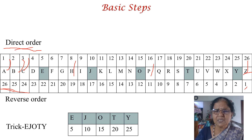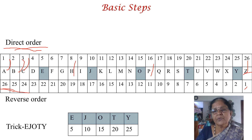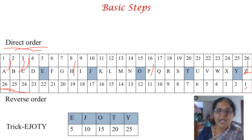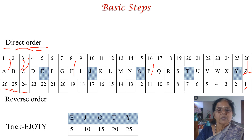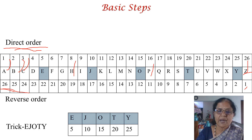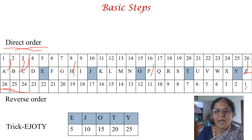Mostly the direct order is used; sometimes they may add reverse order also. Make a note that the direct order number and the reverse order number always add up to 27. For Z it is 26 plus 1 equals 27. For A it is 1 plus 26 equals 27. For B it is 2 plus 25 equals 27. For C it is 3 plus 24 equals 27. So for all alphabets, the direct and reverse order numbers add up to 27.